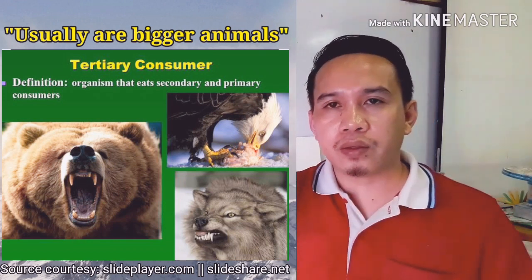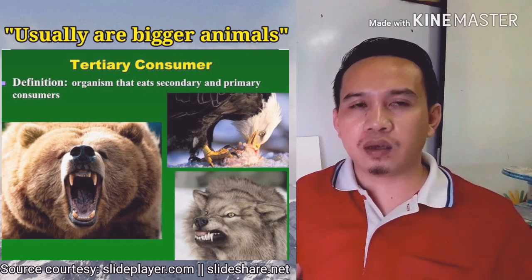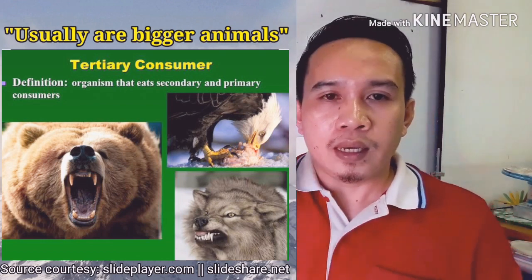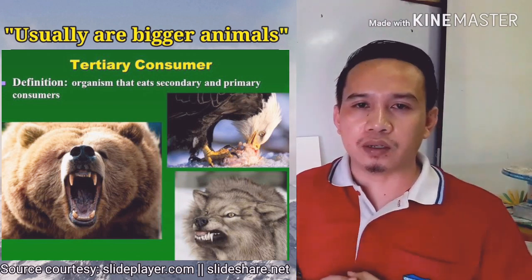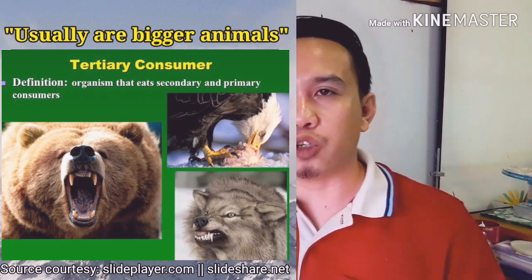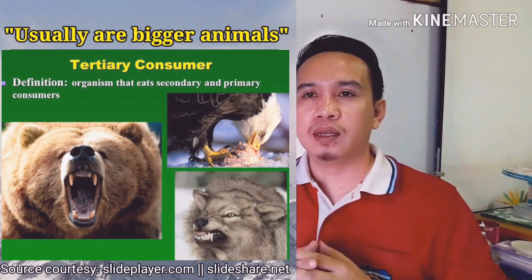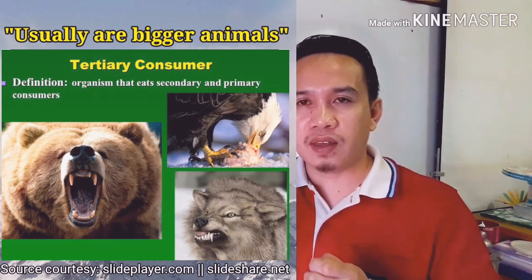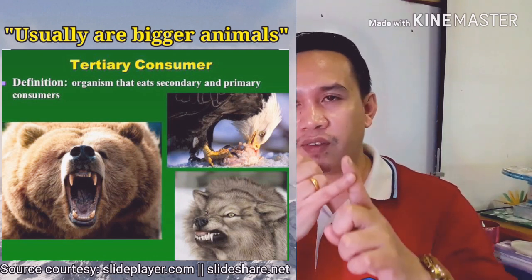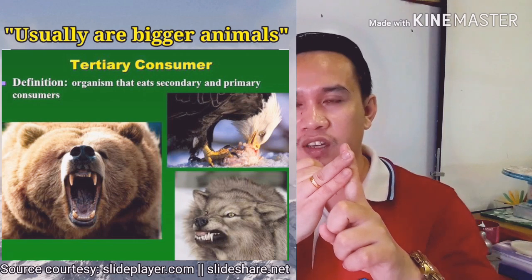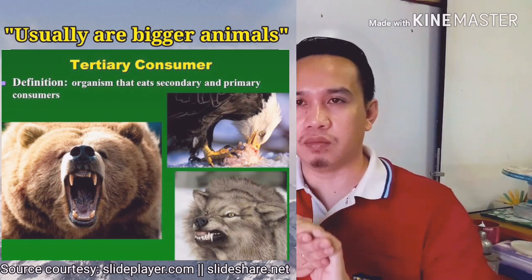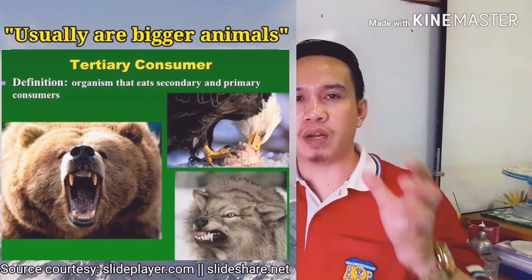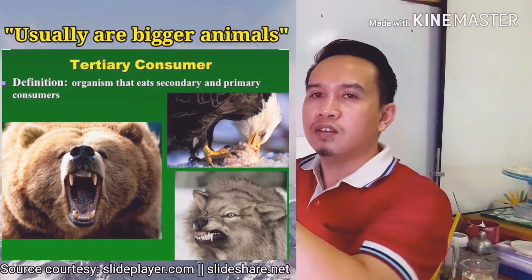The third type of consumers is what we call tertiary consumers, or consumer number three. Tertiary consumers are even larger animals which feed on the secondary consumers. Among all these types of consumers, there is what we call a symbiotic relationship — a give-and-take relationship where someone may benefit, another may be harmed or even killed, and others are not harmed. This can happen during food web and food chain interactions.